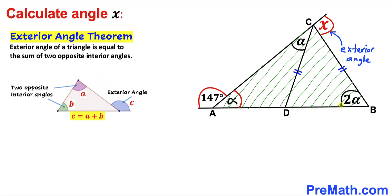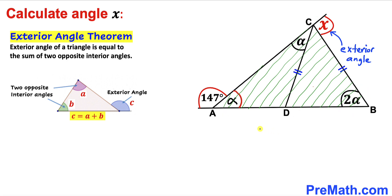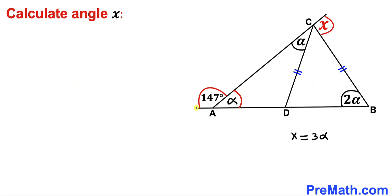Let's focus on the big triangle ABC. We can see that this is our exterior angle, and this is going to be equal to the sum of these two opposite interior angles, alpha and 2 alpha. So therefore, angle x is going to be alpha plus 2 alpha, which means x equals 3 times alpha.